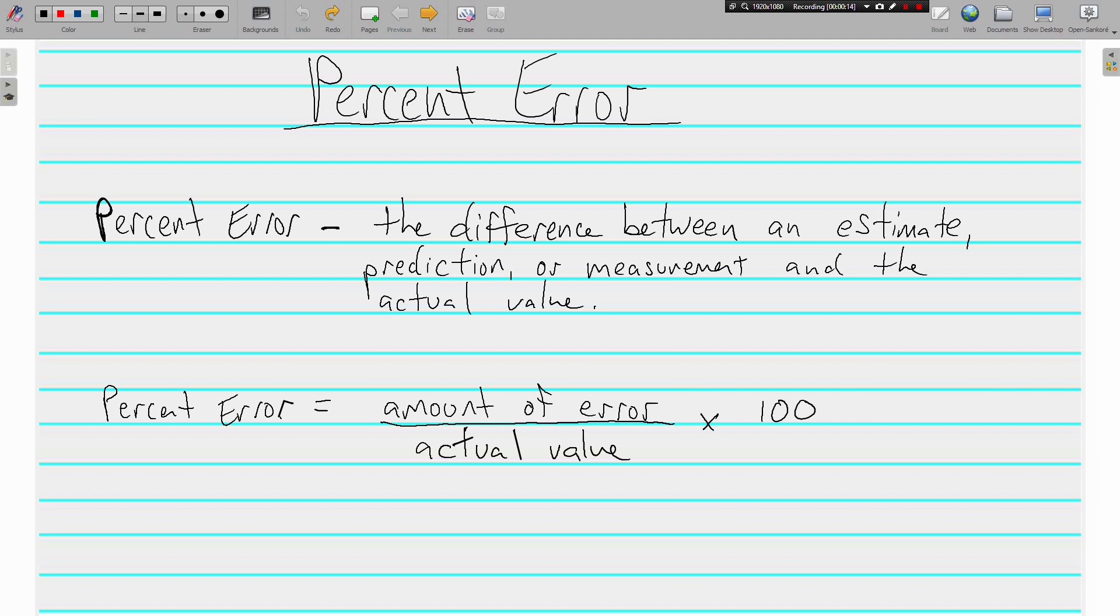Sometimes people make a guess at something, or they measure something incorrectly. To find the Percent Error means you take the error, the difference in what you thought it was and what it actually is, and you divide it by the actual value and then multiply by 100 to turn a decimal into a percent.